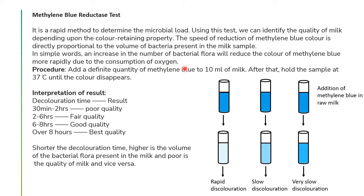The procedure is: add a definite quantity of methylene blue to 10 ml of milk and hold the sample at 37°C until the color disappears, monitoring the minutes required for color disappearance. Interpretations: if the time required for color disappearance is 30 minutes to 2 hours, the quality is poor; 2 to 6 hours is fair quality; 6 to 8 hours is good quality; and over 8 hours is best quality.